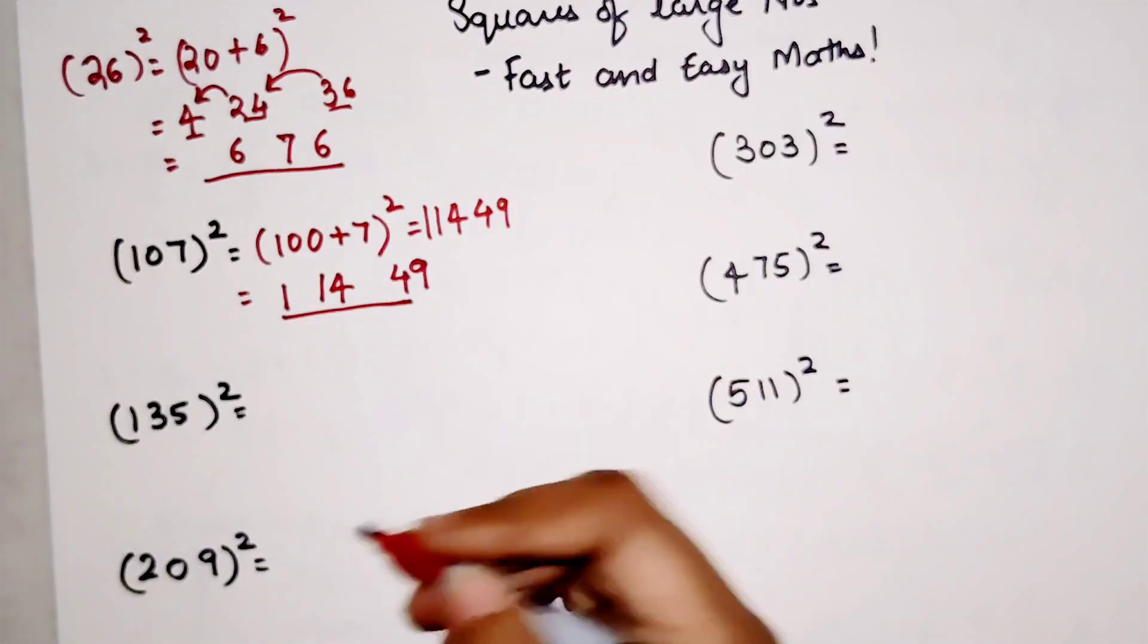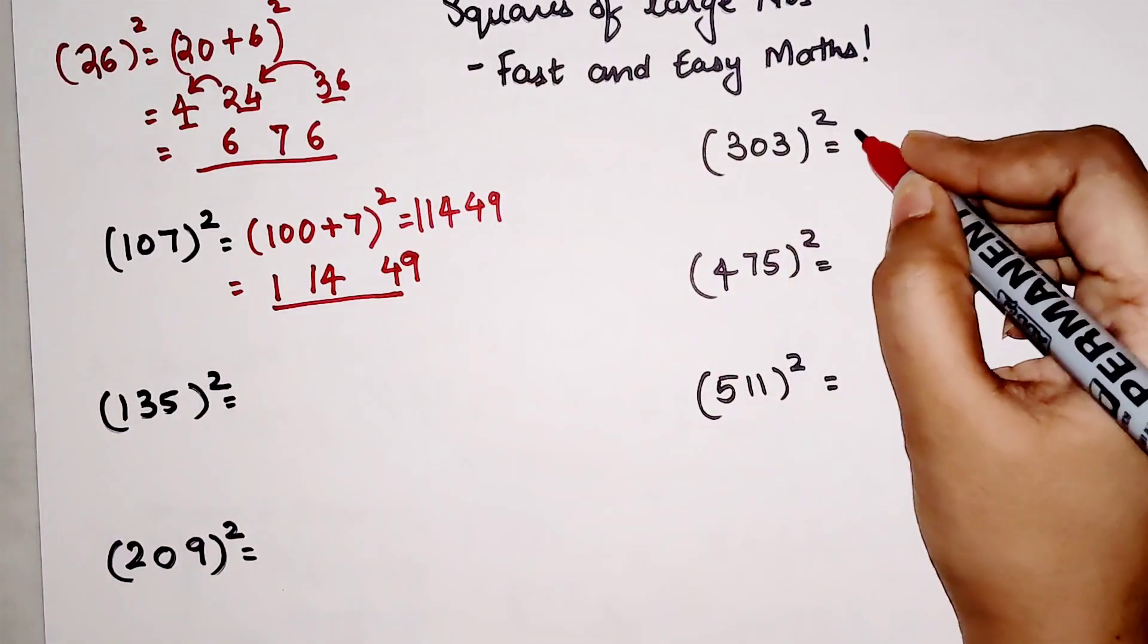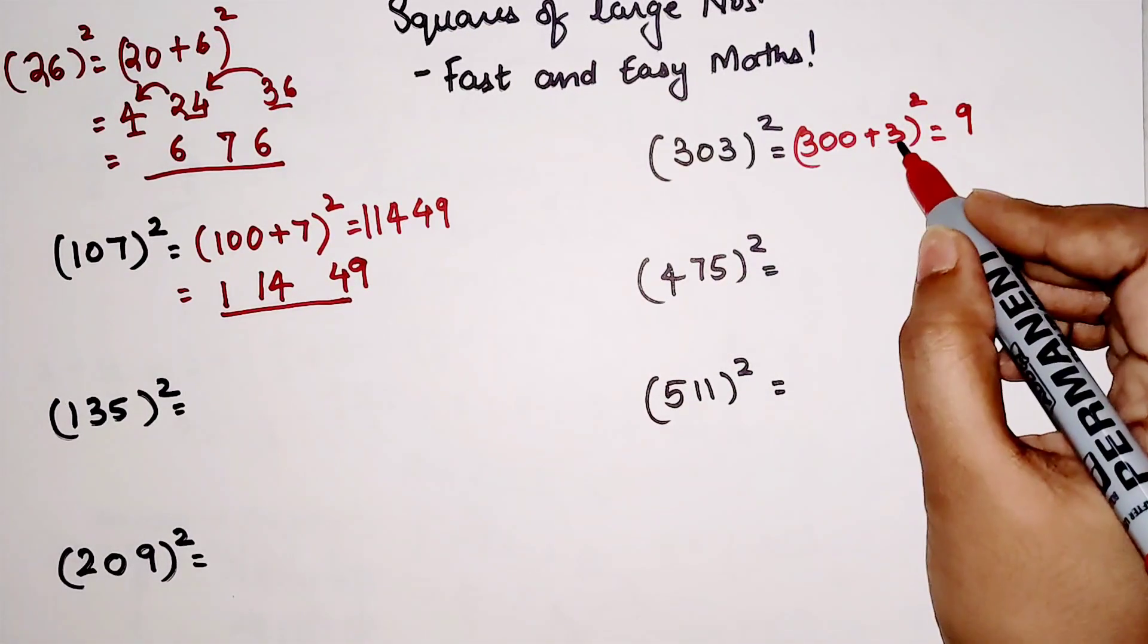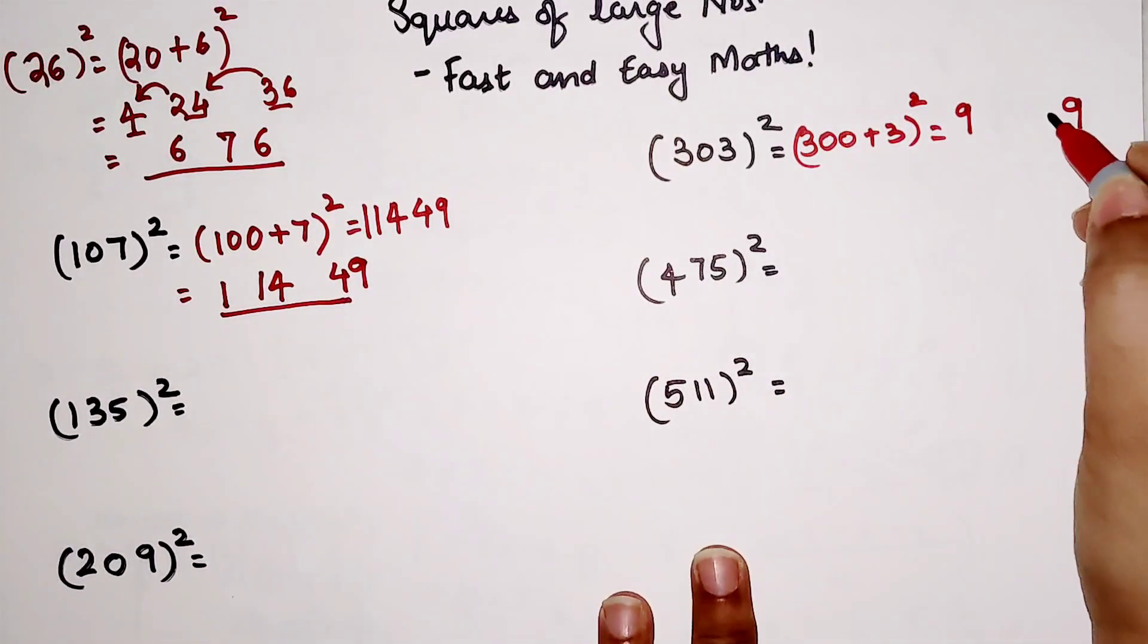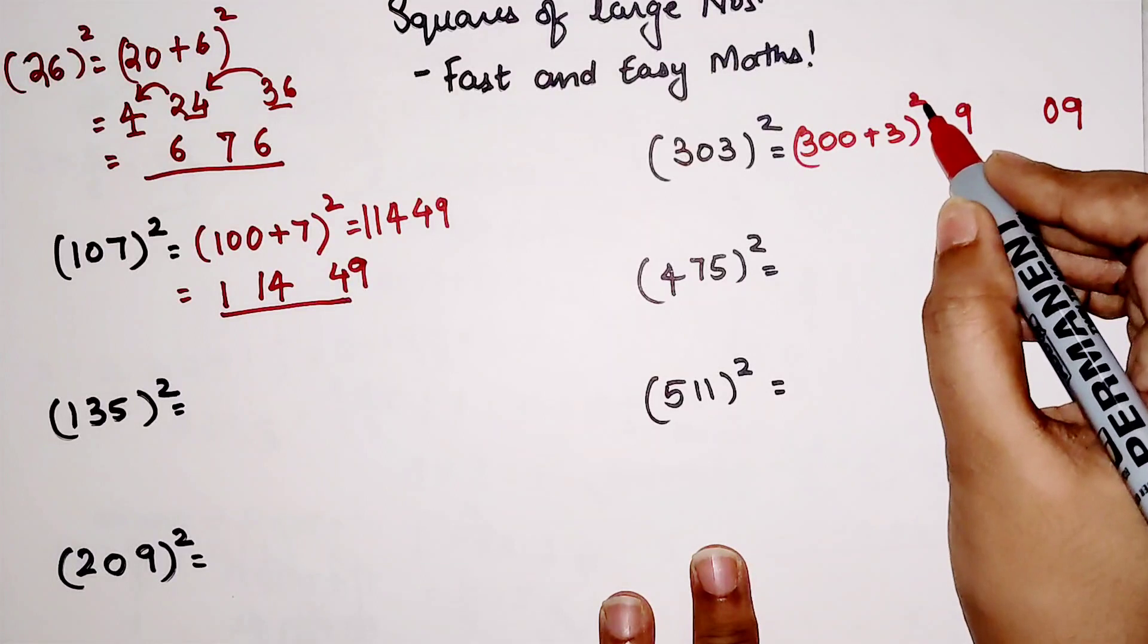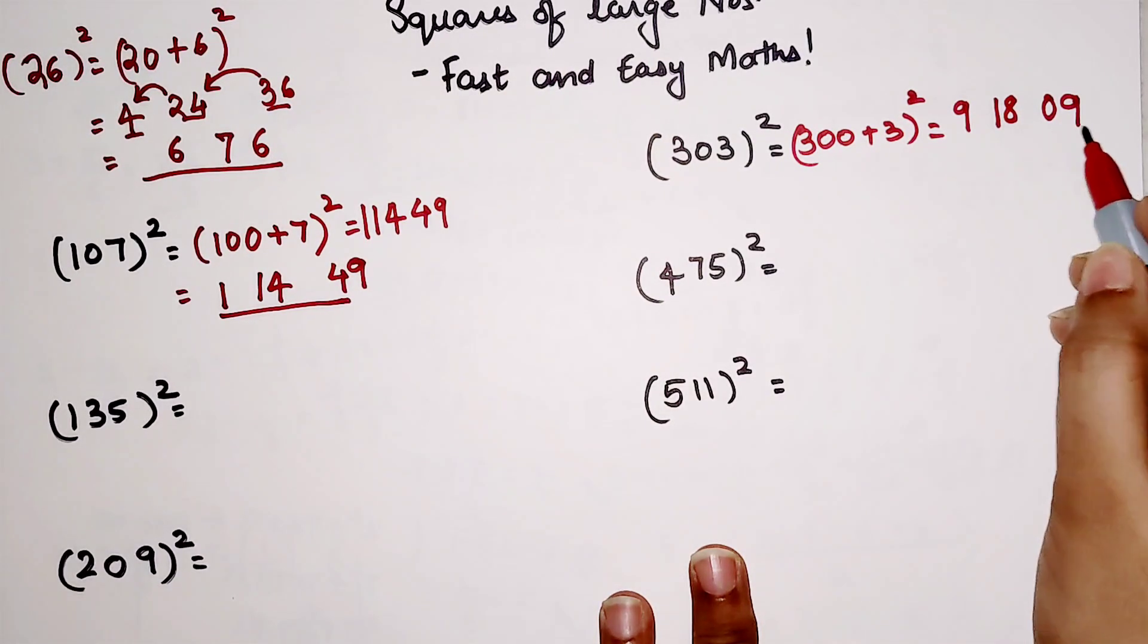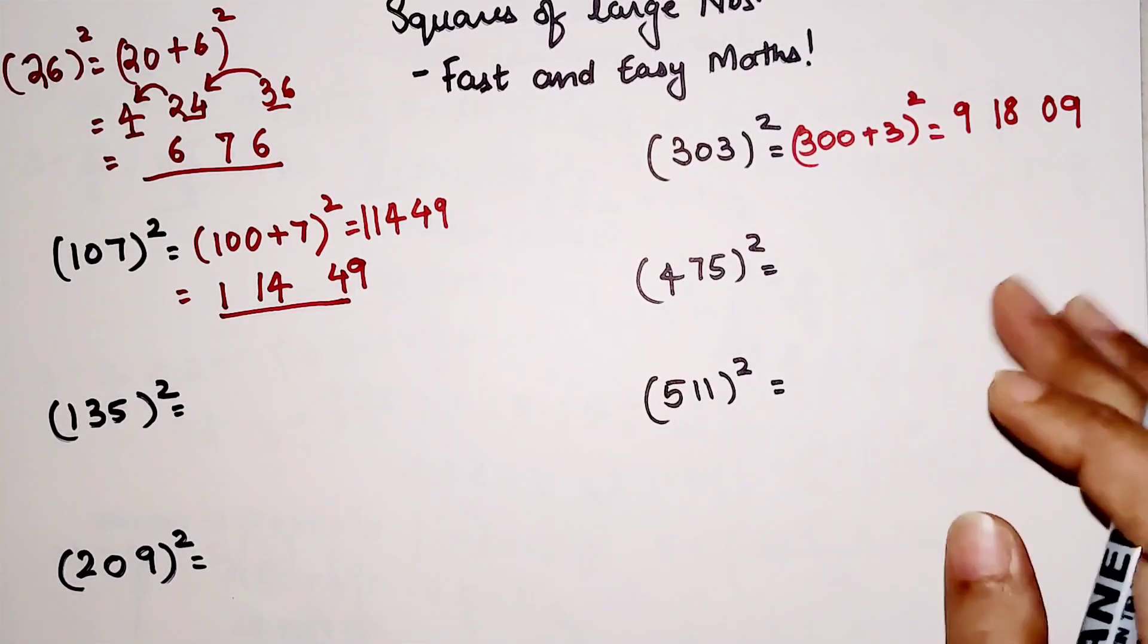Let's quickly do 303². This is 300 plus 3, the whole square. So first we will write down square of 3 which is 9. Then square of again 3 which is 9. But like I said, because there are two zeros, we are going to write down all the answers in two digits. So we will write this as 09. Then we multiply 3 into 3 into 2 which is 18. So again 18 is a two-digit answer, so we do not have to put a zero or anything. So your final answer is 91,809.